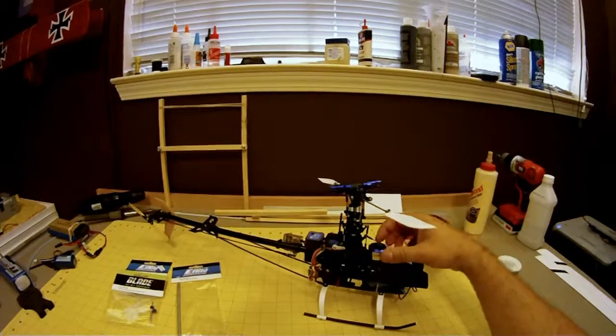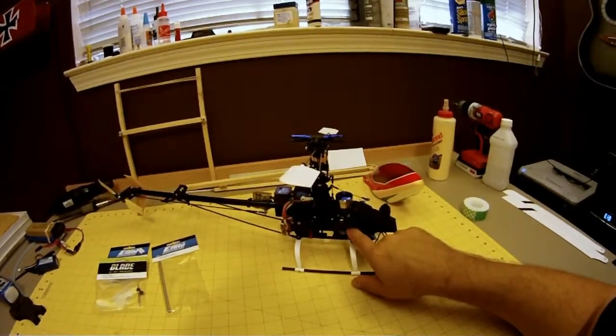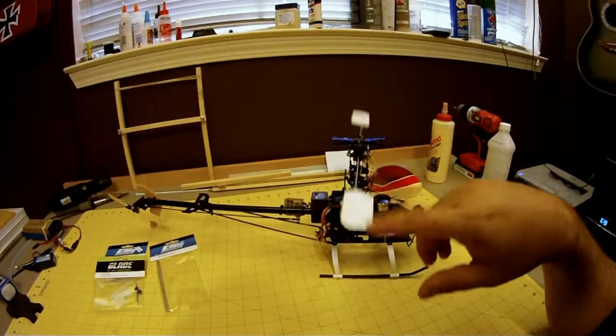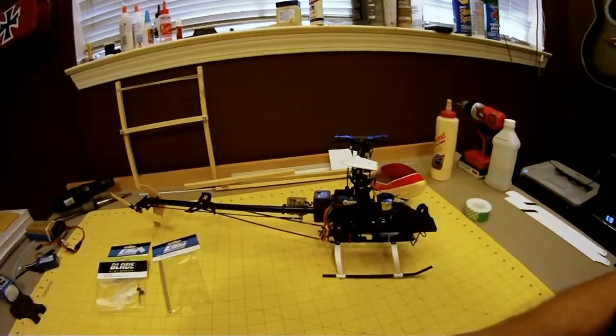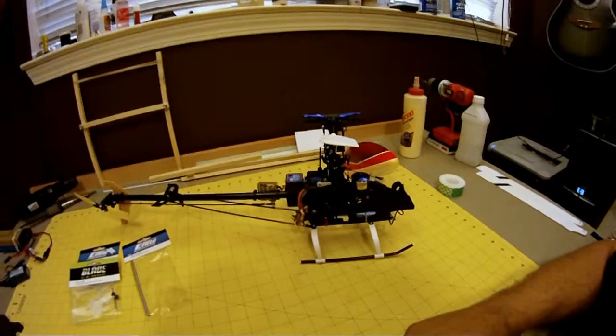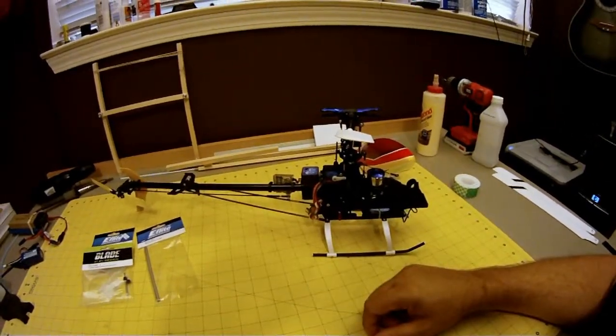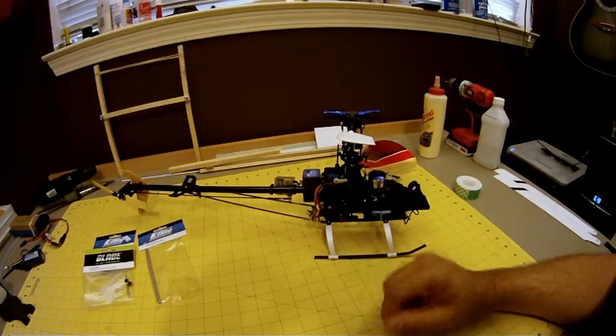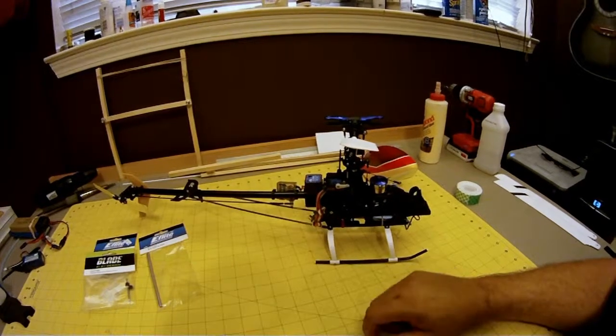It's got the stock 420 motor, stock I think 25 amp speed controller. I've upgraded it, if you want to call it upgrading, with these Tower Pro 9 gram servos. It's not much of an upgrade, but it is at the same time. Those were three bucks a piece, and they're 10 times more durable than the E-flight servos that came in this kit.